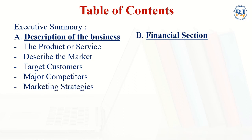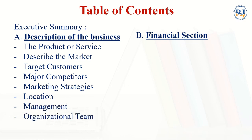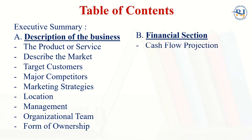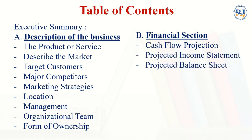What are the major competitors in that particular location? Marketing strategies. What will be the location of your business? What management will be involved? What will be the organizational teams and structure, and what kind of ownership will you have? In the financial section of the table of contents: the first one is cash flow projection, then projected income statement, projected balance sheet, and the last one is other financial information. All these elements should be in your business plan, and I will be explaining each one by one in the subsequent slides.